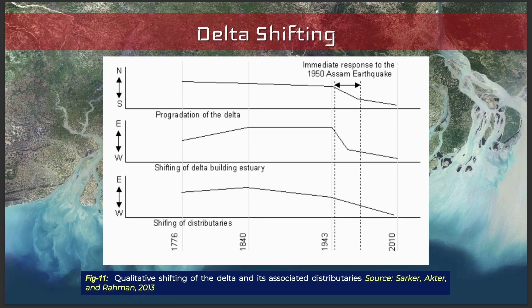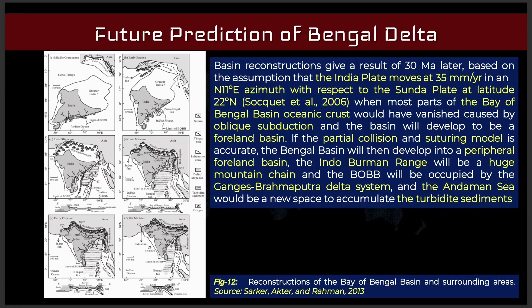In the meantime, the distributaries within the basin also shifted in the west due to channel avulsion. Regarding the future of this basin, from basin reconstruction it is predicted that most of the oceanic crust of the Bay of Bengal will be consumed due to the oblique subduction of the Indian Plate northwards in about 30 million years. The basin would then form a foreland basin, the GBM delta system will occupy the Bay of Bengal basin, the new depocentre will shift to the Irrawaddy and the Andaman Sea, and the present delta deposits would form a large-scale mountain belt due to the tectonic movement of the Indian and Burma plates.